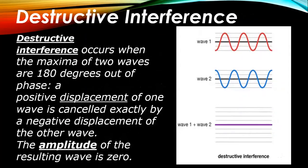What is destructive interference? Destructive interference is when wave one is at the crest and wave two is at the trough. Wave one and wave two are out-of-phase. Out-of-phase means the interference is destructive, and the resultant amplitude will always be zero.